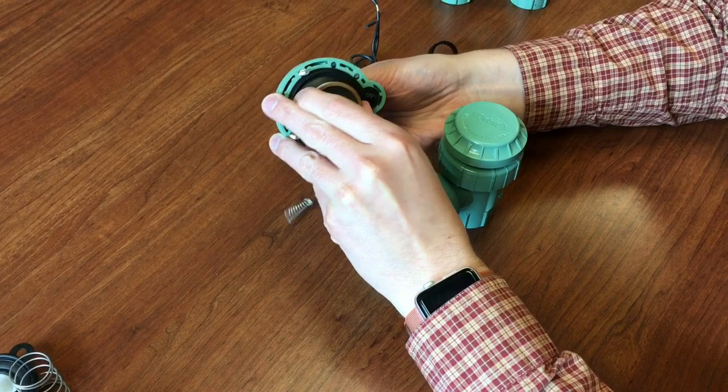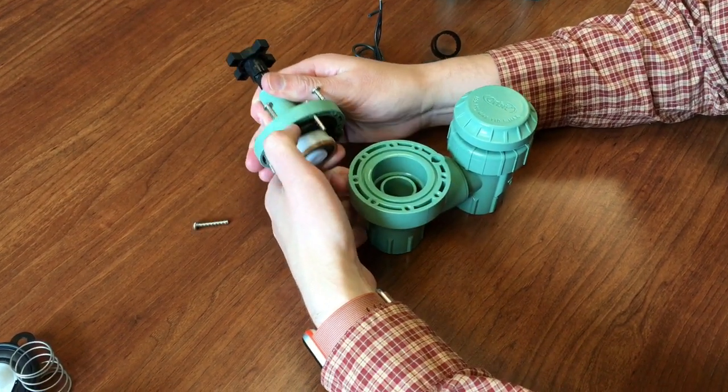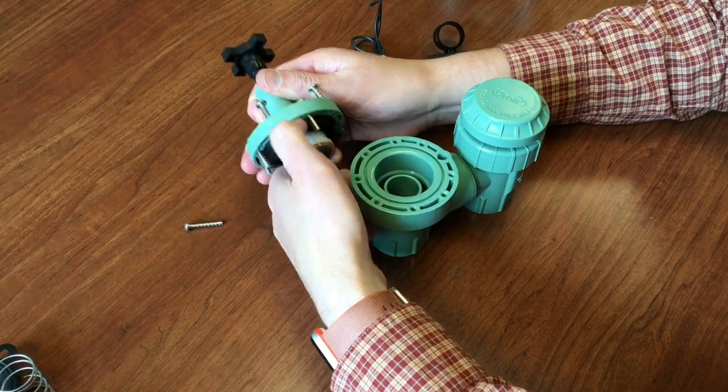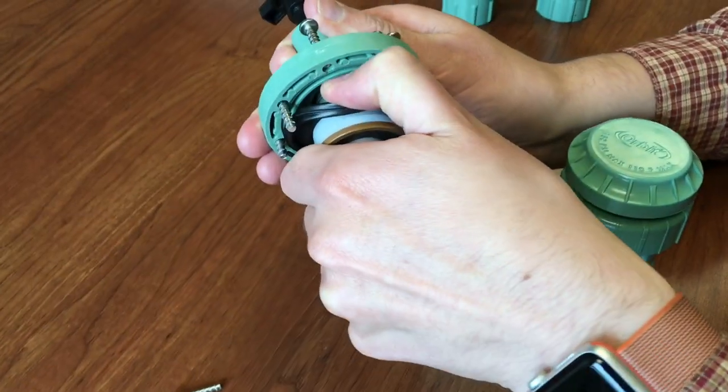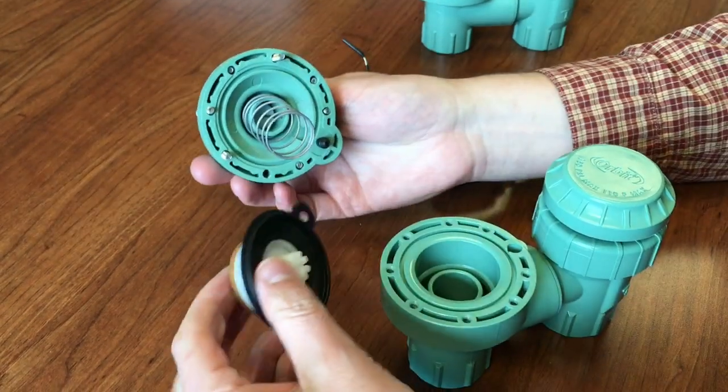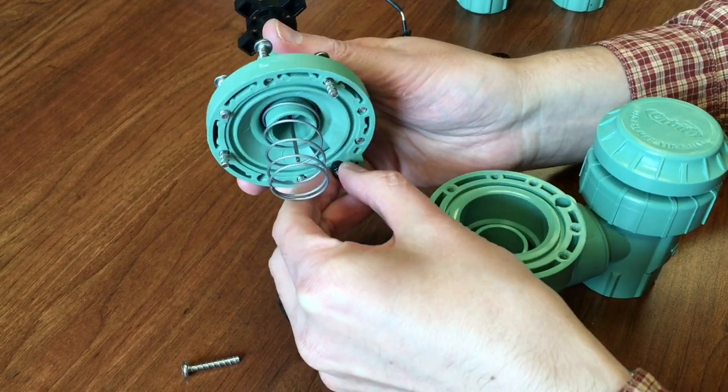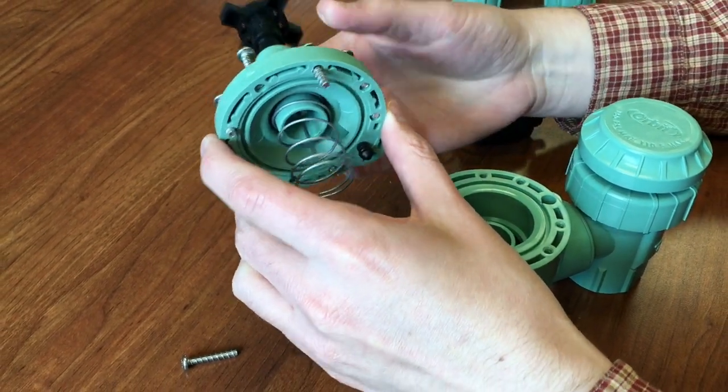And then underneath that, you have a spring. And the diaphragm rests on this screw here, which is connected to the flow control and the on-off lever at the top.